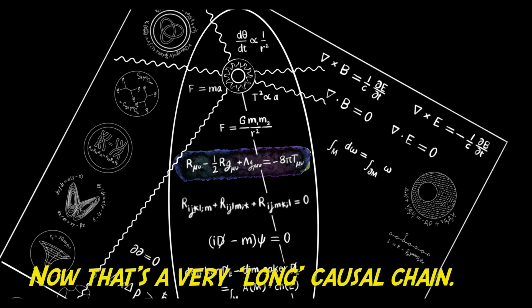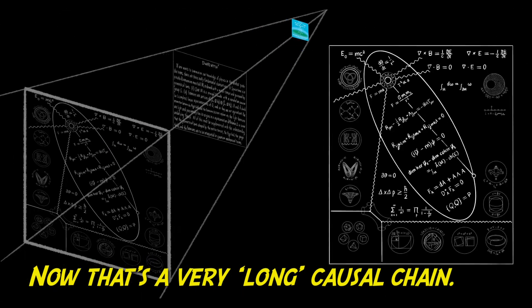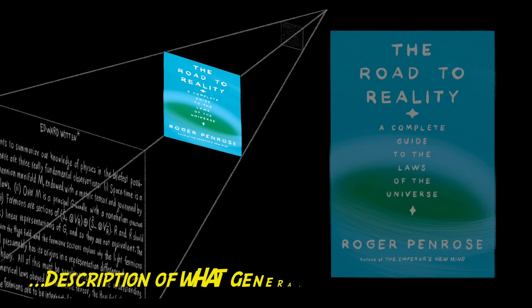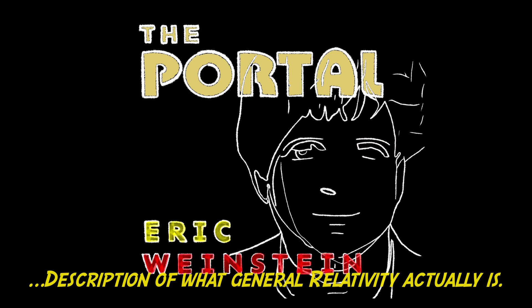And you set that equal to the amount of stuff. Now that's a very long causal chain, but it is linguistically an accurate description of what general relativity actually is.